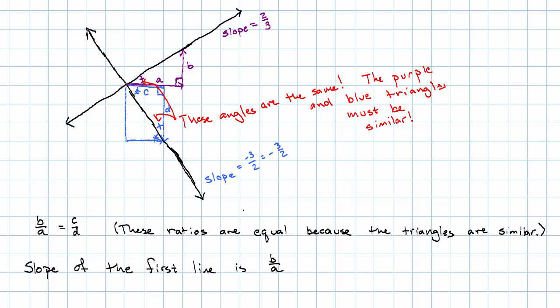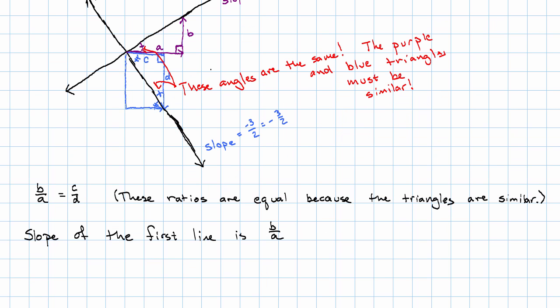The slope of the first line is just its rise over its run, B over A. The slope of the second line, well, its rise is totally not C, right? Its rise is D but it points downward. So its rise is negative D and its run is C. So its slope is its rise, negative D over C.